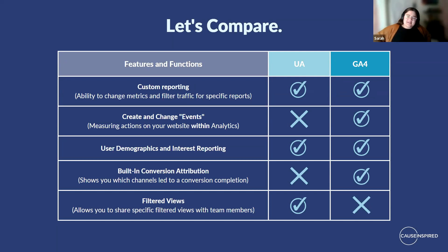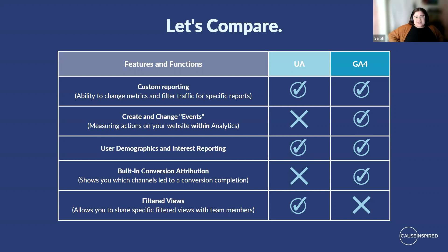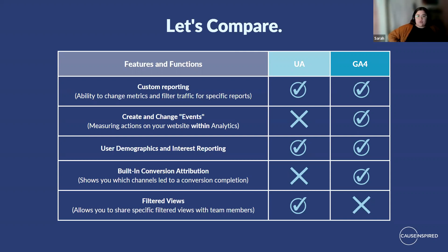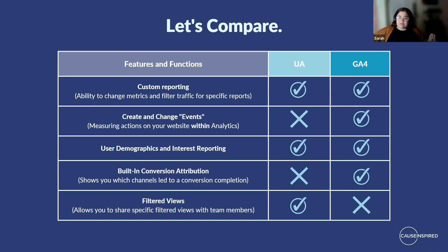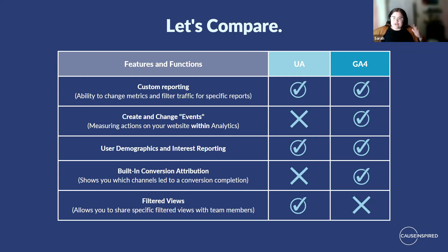User demographics and interest reporting — I've heard a lot of folks over the past couple of months tell me that GA4 does not have interest reporting or demographic information, and it totally does. It actually has really good interest reporting; you just have to enable it. Today we're going to talk a little bit about how to enable that. Built-in conversion attribution — which channels are driving the most traffic, where are those users coming from, and how did they move through each of your channels to get to your site? Universal Analytics has some conversion attribution, but not at the same level as GA4, where we have really cool conversion pathing.